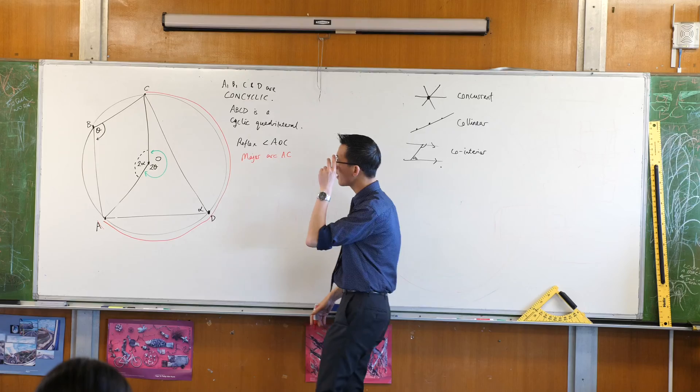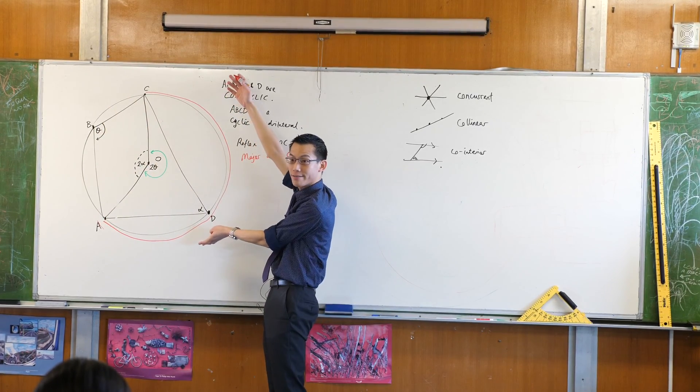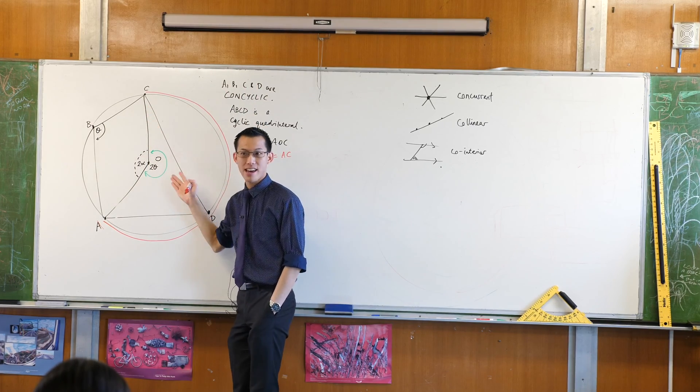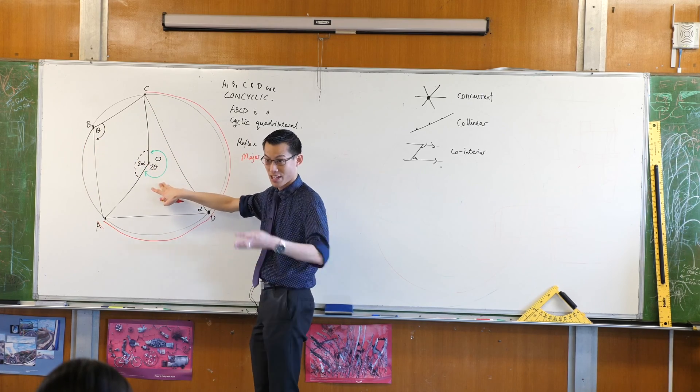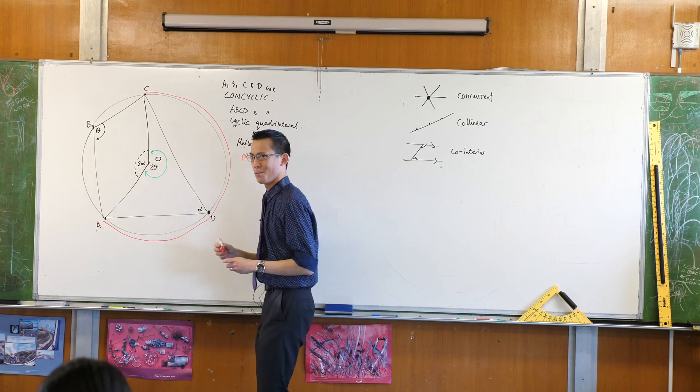So can you see that angle ABC stands on this red arc, stands on the major arc. And AOC is the same. It also stands on that arc. One's in the circumference, one's in the centre. So that's why Raj has got it, he's nailed it, that's two theta. Okay, we're almost there.